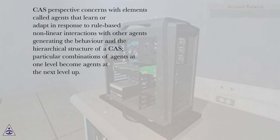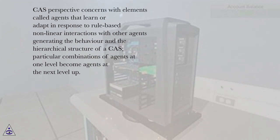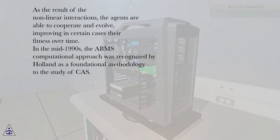The CAS perspective concerns elements called agents that learn or adapt in response to rule-based, non-linear interactions with other agents, generating the behavior and the hierarchical structure of a CAS. Particular combinations of agents at one level become agents at the next level up. As a result of the non-linear interactions, the agents are able to cooperate and evolve, improving in certain cases their fitness over time.